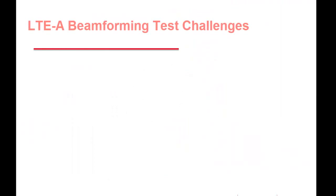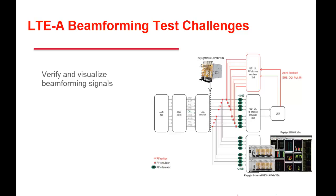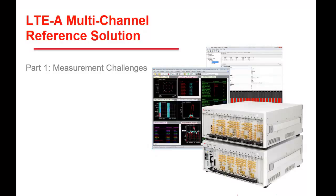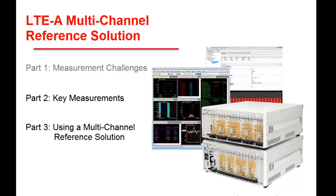Thanks, Craig, for the detailed explanation on the application. Common problems we hear from customers are the inability to verify and visualize the beamforming signals at the RF antenna. This includes the calibration performance, the baseband encoding beamforming weightings, and the demodulation of single and dual layer EVM at the RF antenna. The complicated test setup for higher order MIMO, like 4x4 or 8x8 configurations, includes hardware connections for phase-coherent synchronization for beamforming applications, and managing the physical size and cost as the number of antennas continues to grow. These are very daunting challenges. Be sure to watch the next two videos in this series to find out how the Keysight LTE/LTE-Advanced Multi-Channel Reference Solution provides the essential elements to enable you to get results quickly and with more confidence.